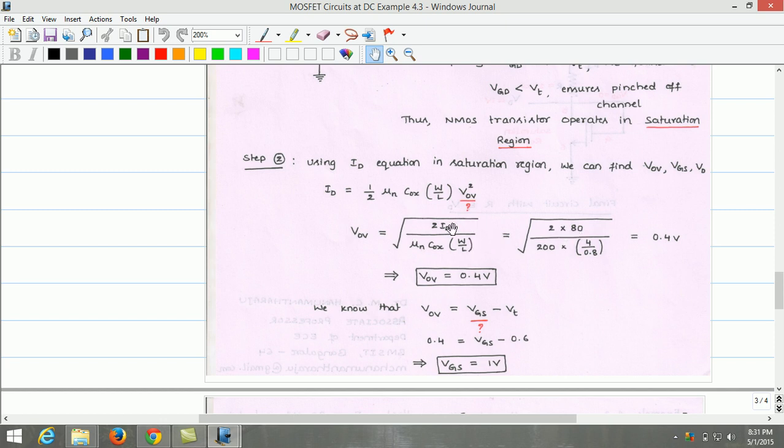Substituting the values given, the microamperes can be suppressed and finally it can be appended. 2 into 80 microampere can be written as 80 divided by 200 into 4 by 0.8. On simplification, we find that overdrive voltage is 0.4 volts.